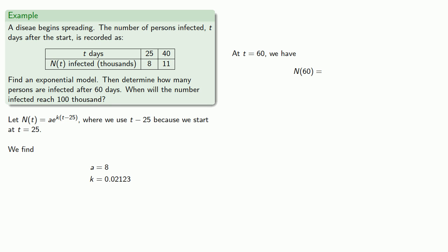And since we know the value of a and k, we can now find at t equal to 60, we have. And here, because N(t) represents thousands of cases, it doesn't make sense to carry that fourth decimal place. And so at t equals 60, there's approximately 16,819 thousand persons infected.